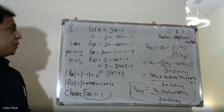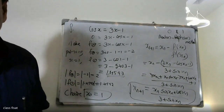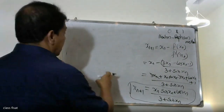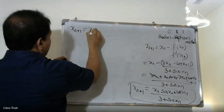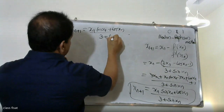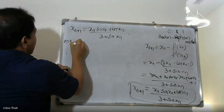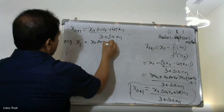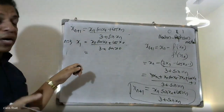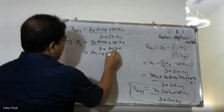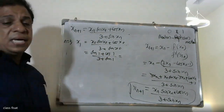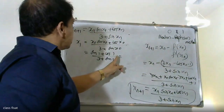So x0 equals 1. Applying the formula: x1 equals x0 sin x0 plus cos x0 plus 1, divided by 3 plus sin x0. That is: 1 times sin 1 plus cos 1 plus 1, divided by 3 plus sin 1.